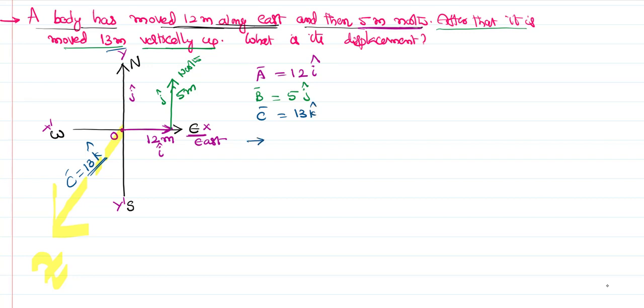What's the resultant of all these vectors? The resultant vector is the vector sum of all the available vectors: 12 i-cap, 5 j-cap, plus 13 k-cap. If you want the magnitude of that vector, that is root of 12 square plus 5 square plus 13 square.